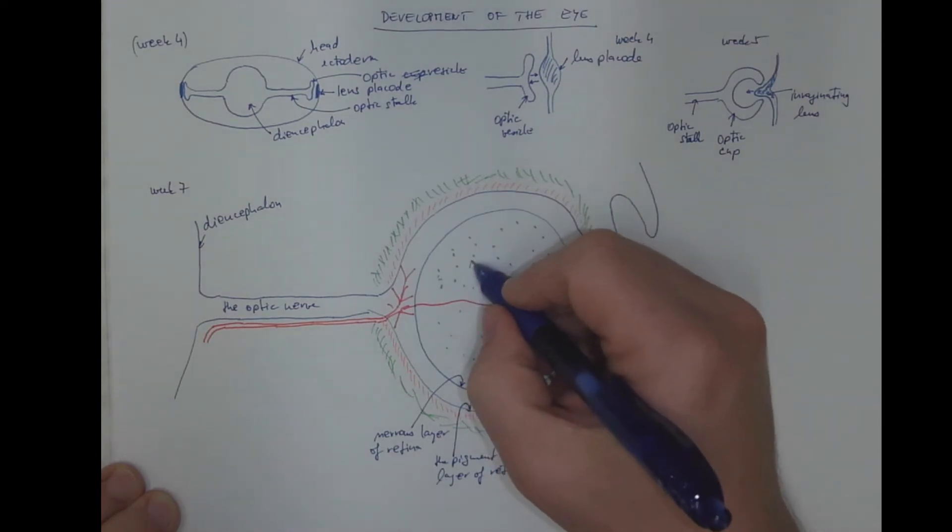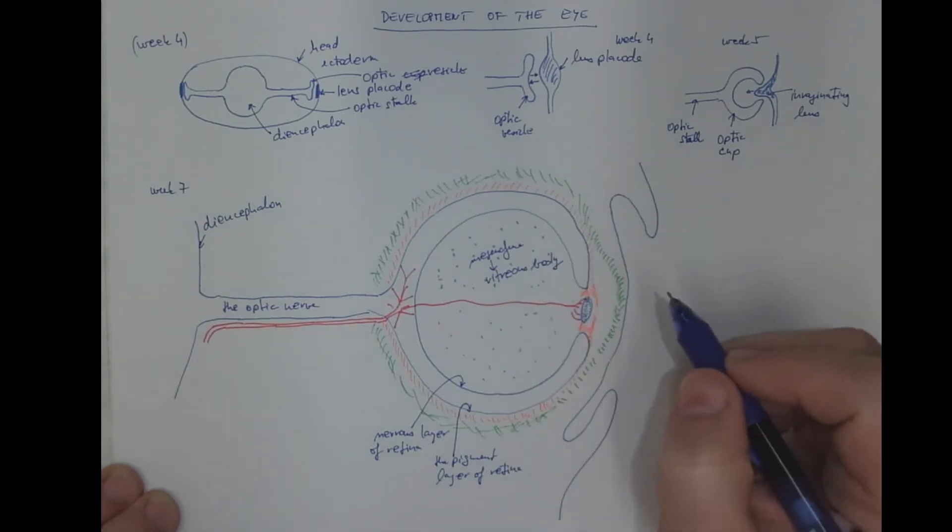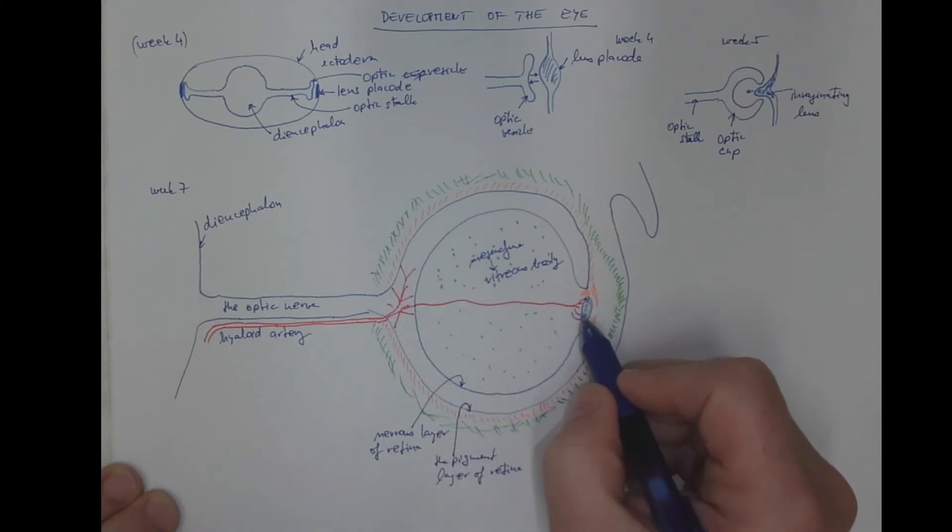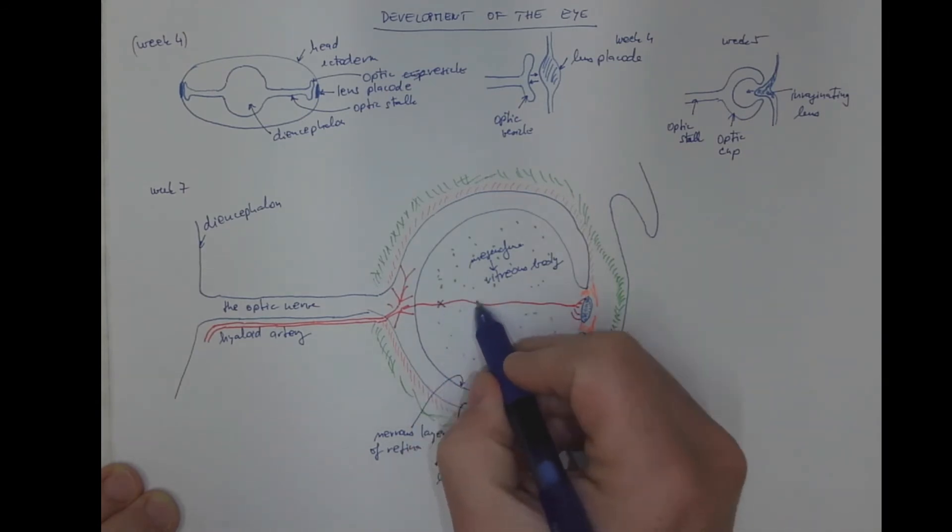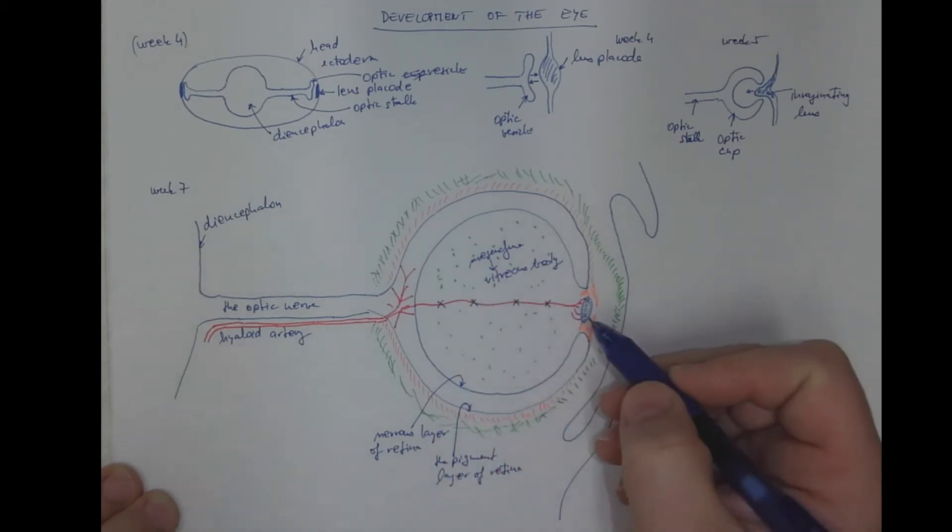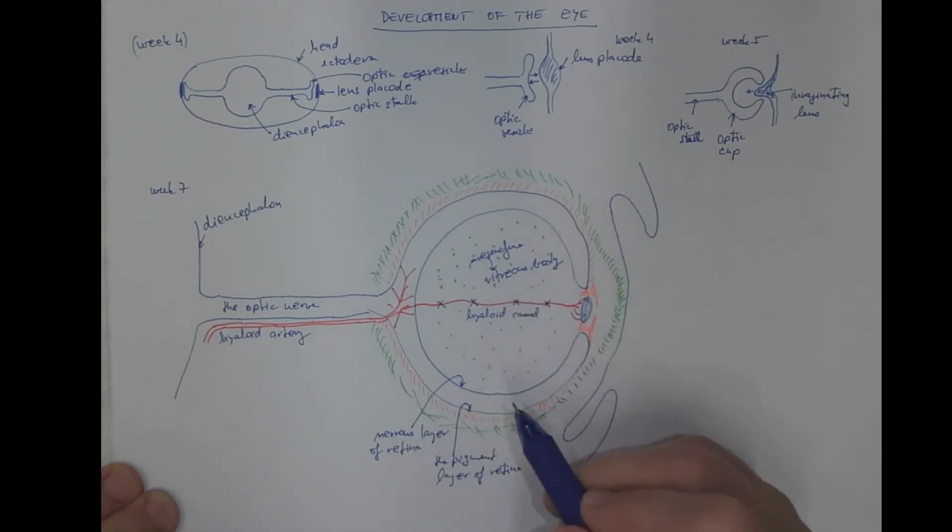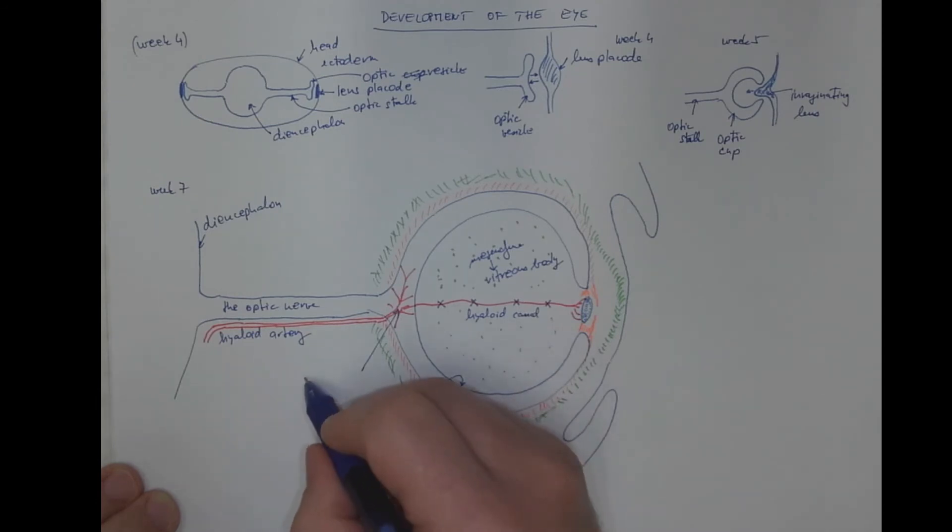This is the mesenchyma which turns to the vitreous body. This is the hyaloid artery. After the lens completes its development, this part of the artery will disappear, and only a hyaloid canal will persist in the vitreous body. The rest of the hyaloid artery will later be called the central artery of retina.